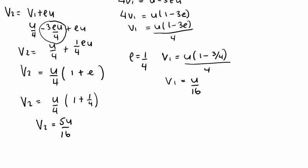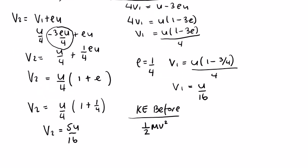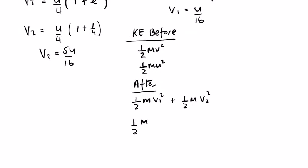Now let's look at the kinetic energy. Kinetic energy before: the first sphere has speed u and the second is at rest, so KE_before = (1/2)mu². Kinetic energy after = (1/2)m*v1² + (1/2)*3m*v2², using masses m and 3m respectively.